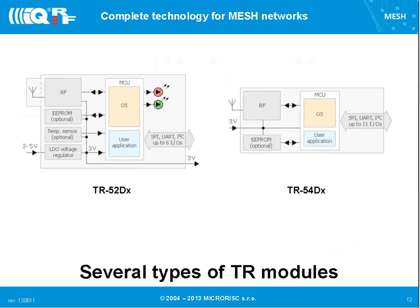On module 52D you have the RF part, EEPROM, temperature sensor, LDO, MCU with operating system, user application, and connectivity via SPI, UART, I2C, and 6 I/O pins. There are also two LEDs, which is useful during development to see that the module is working. For final applications you often don't need the LEDs, temperature sensor, or LDO. The 54D is a cheaper module without LDO voltage; if you have a good power supply from your board, this reduces price and size.